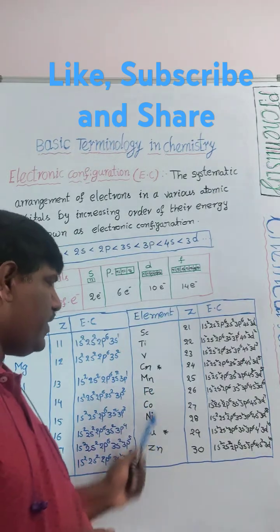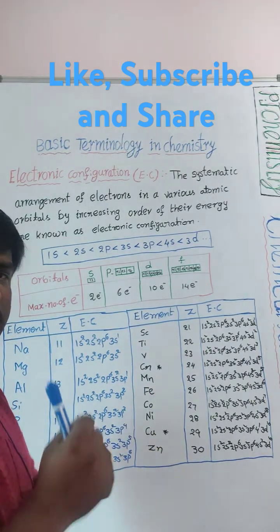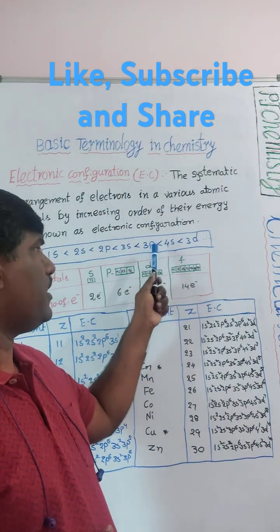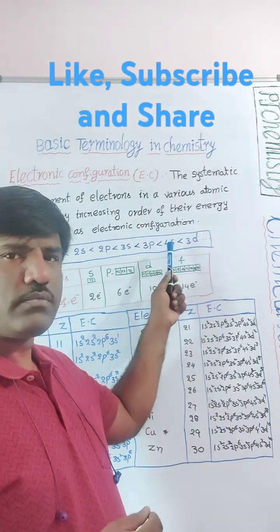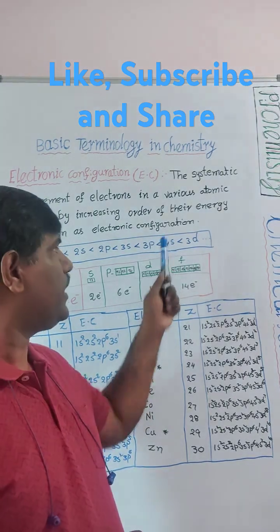Next, chromium and copper are especially given star symbols. For stability, its electron configuration is little bit changing. Till 3p6, 18 electrons, 4s2 means 20 electrons.